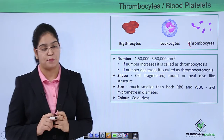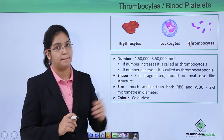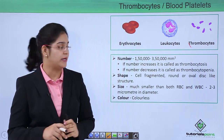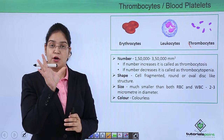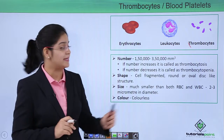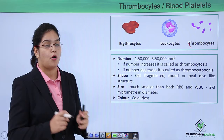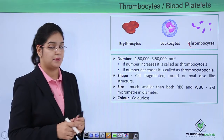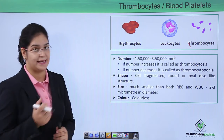The number of platelets in our body is 150 lakh to 350 lakh per cubic millimeter. There are two conditions: if the platelet number increases in the body, it is called thrombocytosis, which can cause the formation of different clots in your blood. If the number decreases, it is called thrombocytopenia, which may cause extra or continuous flow of blood from an injured place.